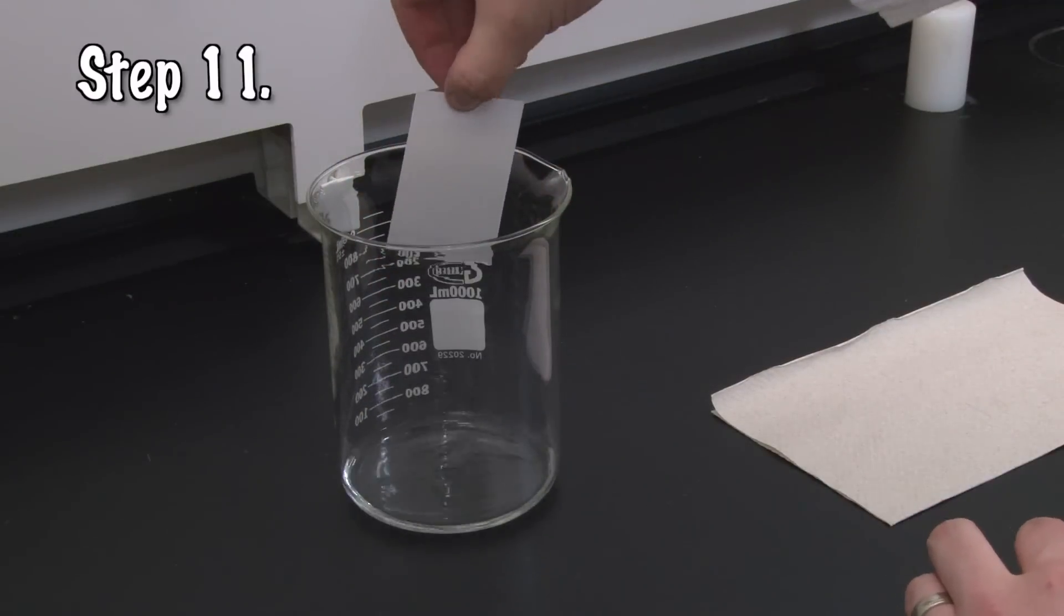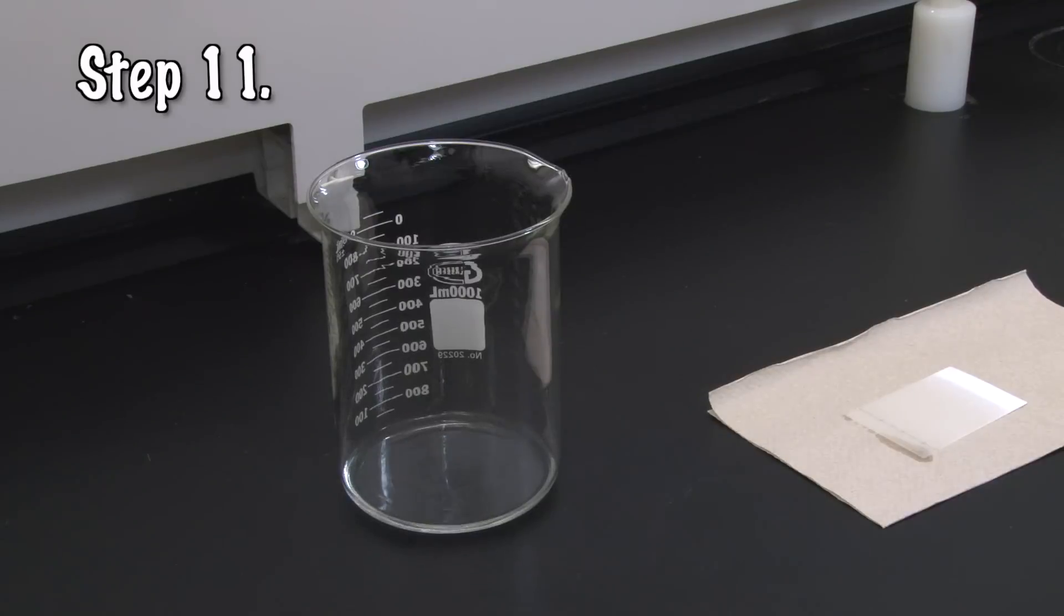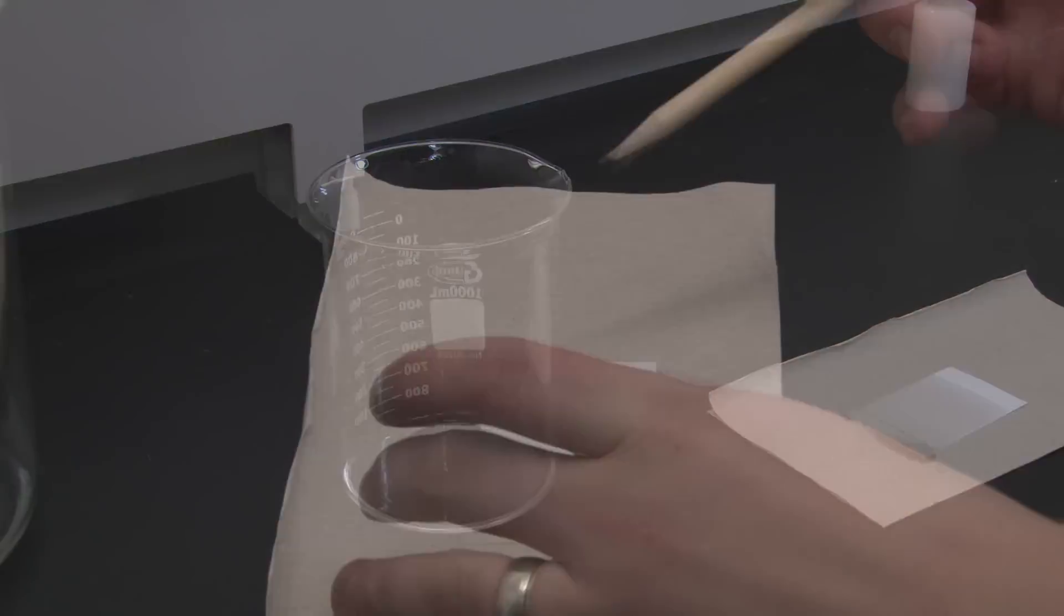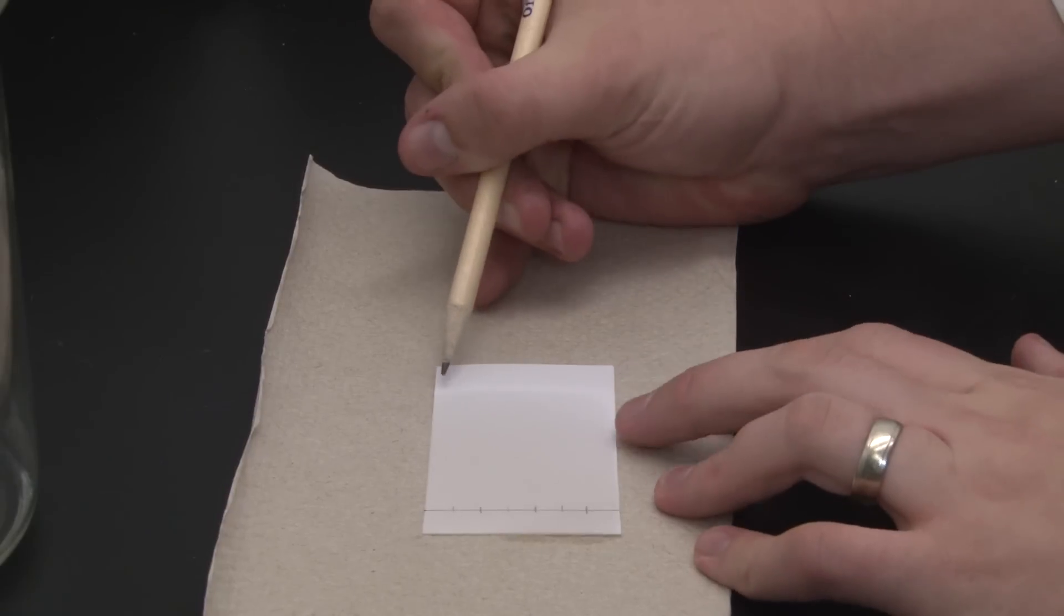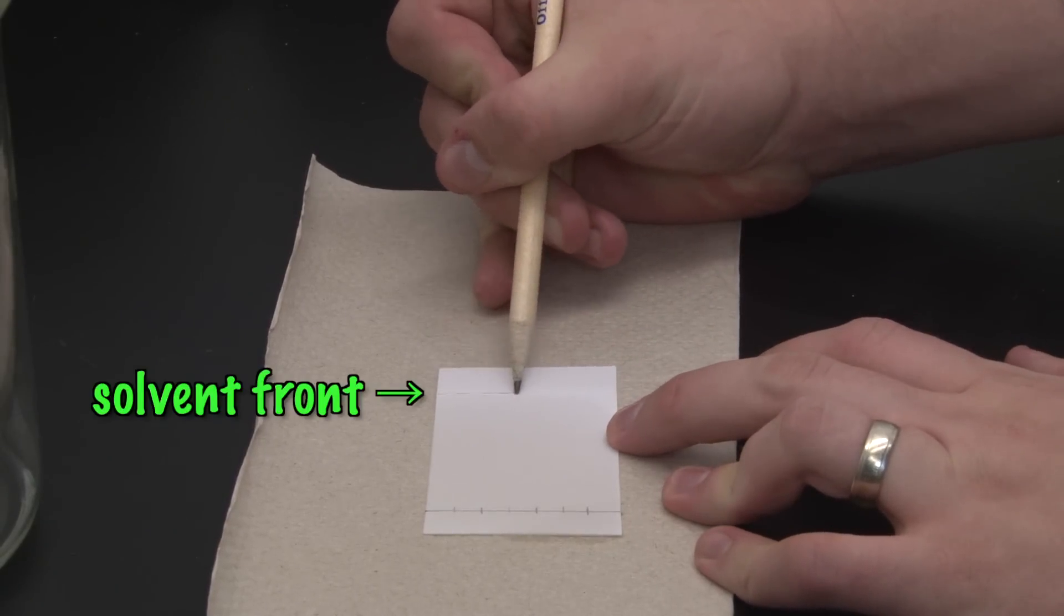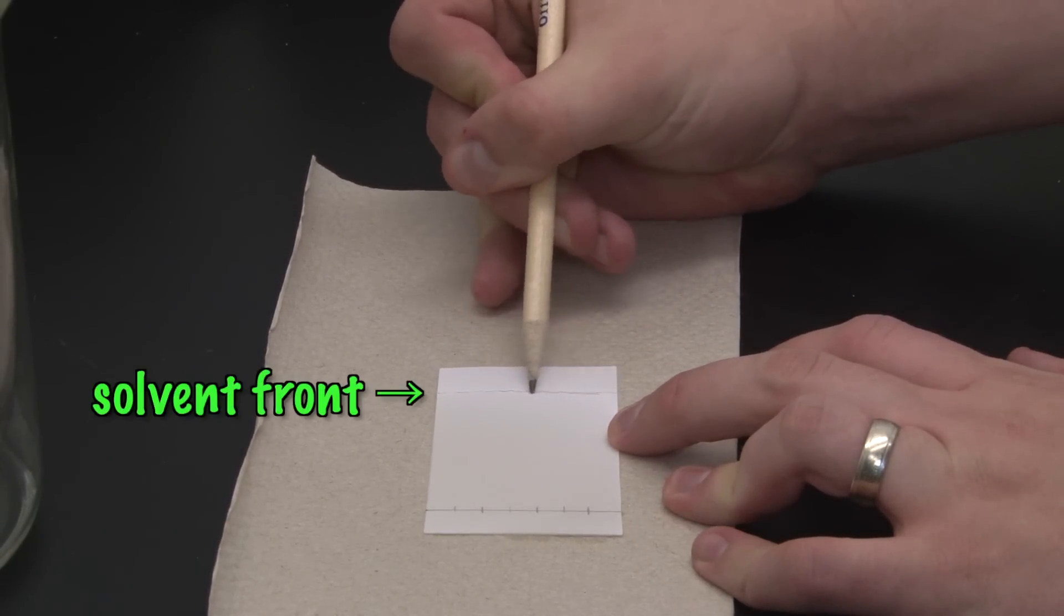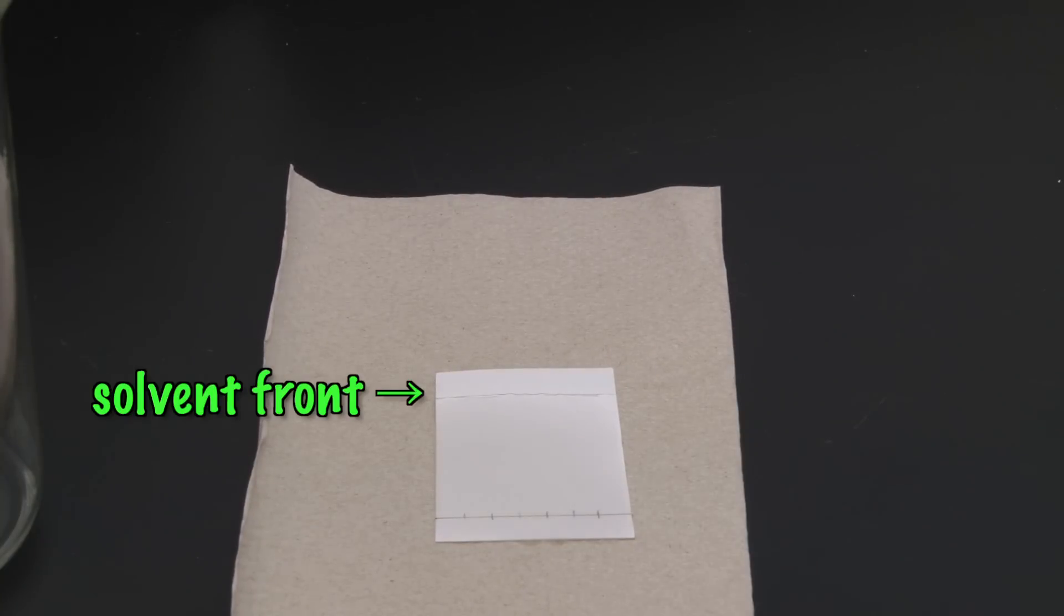Remove the TLC sheet once the solvent has made it up to about one or two centimeters from the top. Place it on a paper towel and use a pencil to mark the solvent front. We'll need to know later how far the solvent traveled, so be sure to mark it before the solvent evaporates. Leave your sheet under the hood for a few minutes until the solvent has evaporated and your sheet is dry.